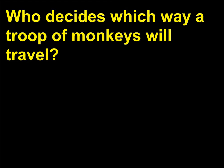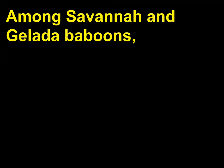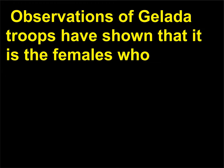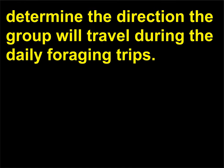Who decides which way a troop of monkeys will travel? Among savanna and gelada baboons, females form the stable social structure of the troops while males transfer between troops. Observations of gelada troops have shown that it is the females who determine the direction the group will travel during the daily foraging trips.